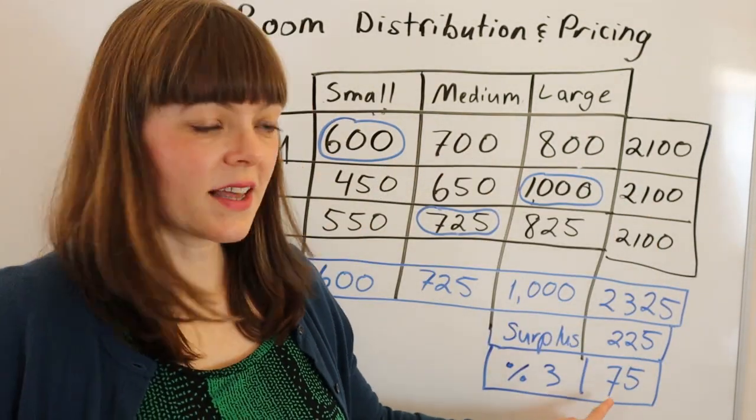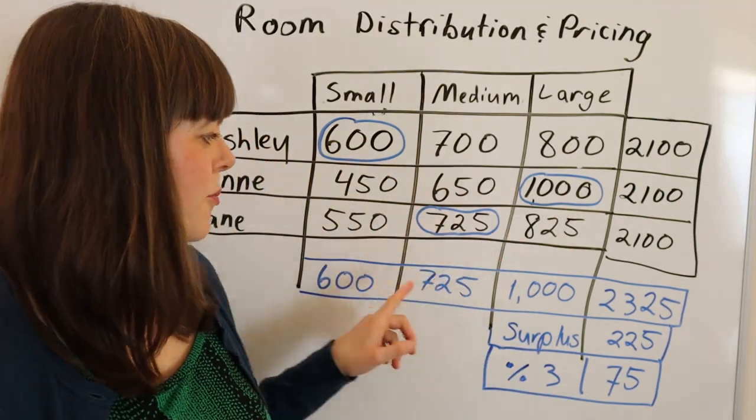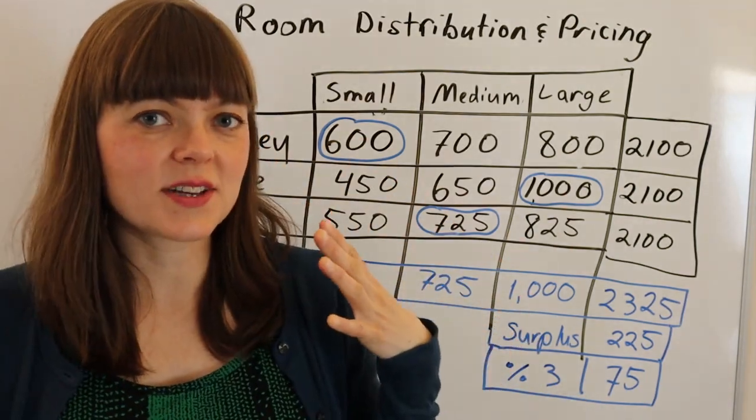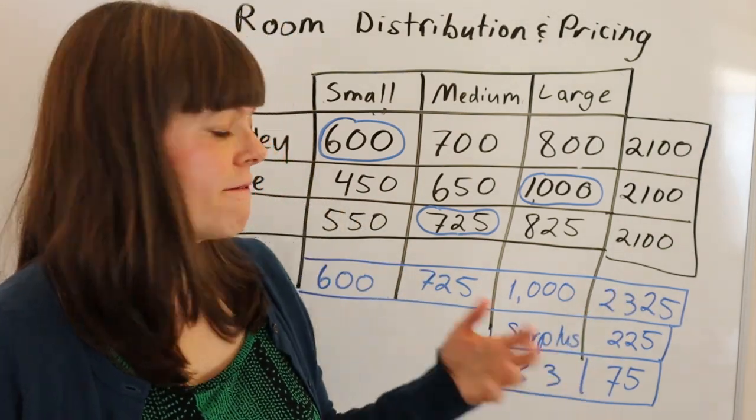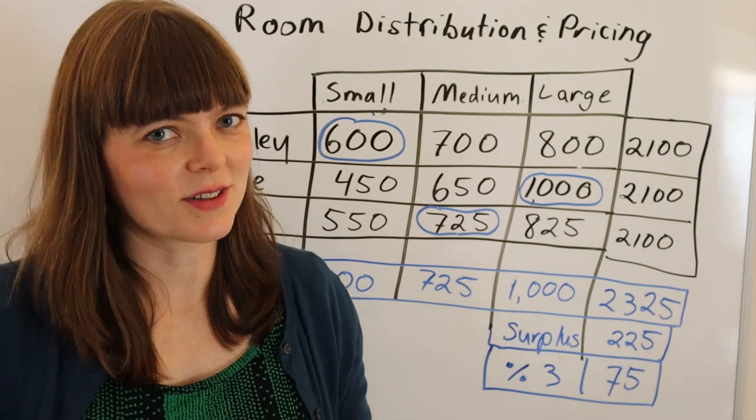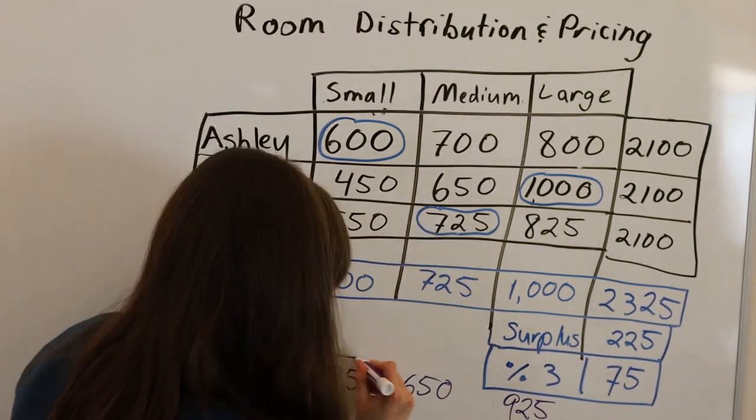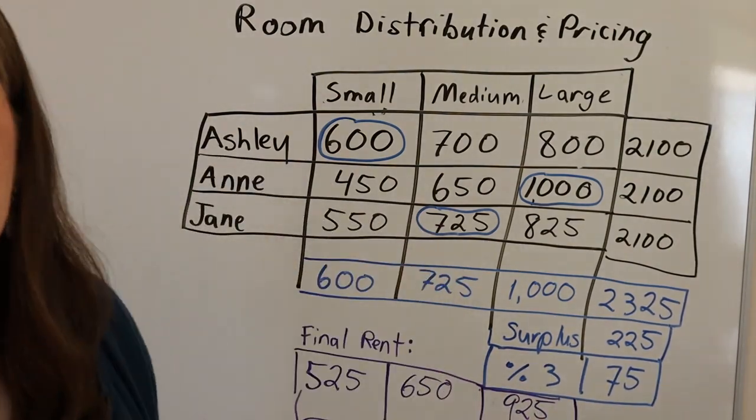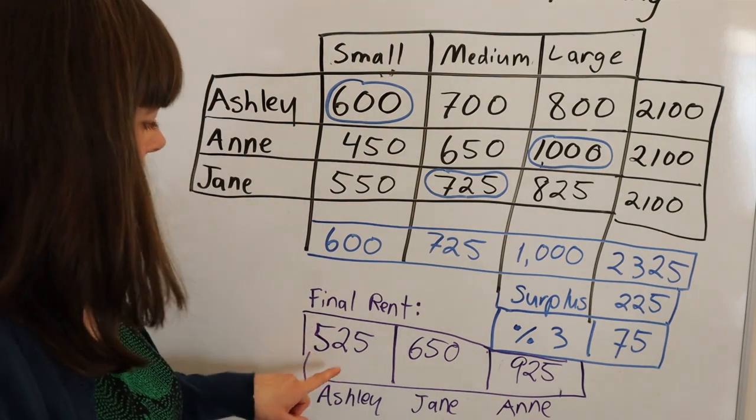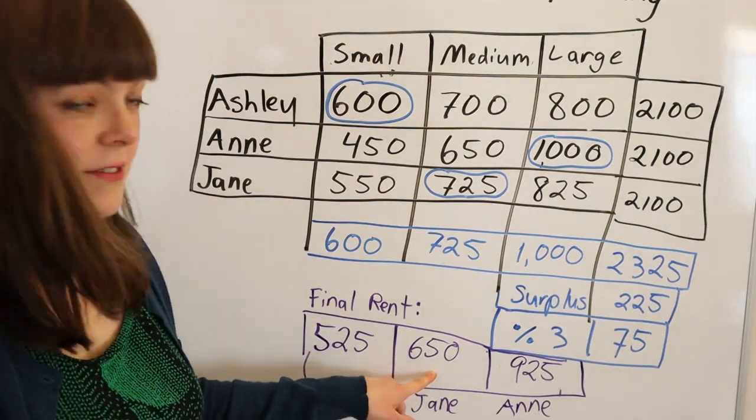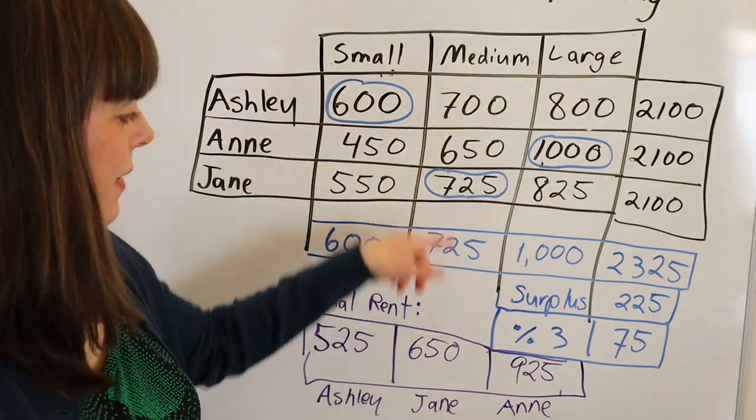That leads to a $75 surplus. We can each subtract $75 from what we originally paid, and that's going to give us our final price that we will pay per month in a fair way of distributing these prices. So let's just write out the final prices. The final prices are $525 for me, $650 for Jane, $925 for Anne for these respective rooms.